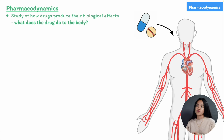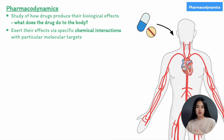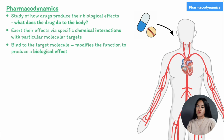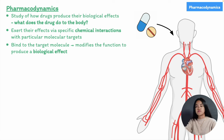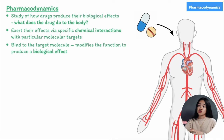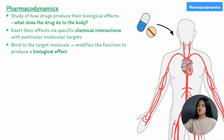Drugs exert their effects by modifying existing physiological or biochemical processes. A lot of drugs exert their effects via specific chemical interactions — covalent bonds, hydrophobic interactions, or electrostatic interactions — with particular molecular targets. Drug targets can be proteins, enzymes, receptors, or other cellular components. The drug binds to the target molecule, which then modifies the function of that molecular target to produce a biological effect, either activating or inhibiting its function. The ability of a drug to bind to its molecular target is determined by both the structure of the drug and the structure of the molecular target.